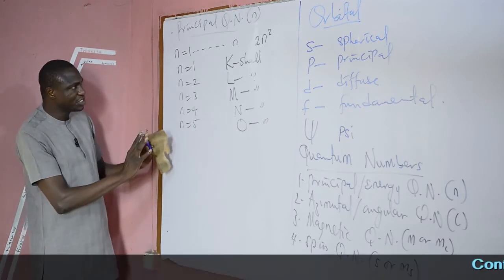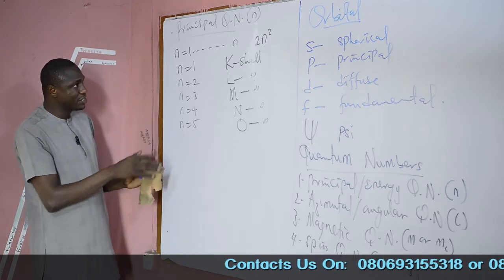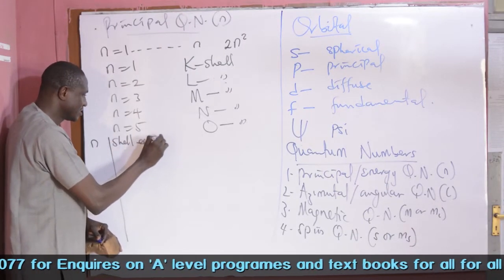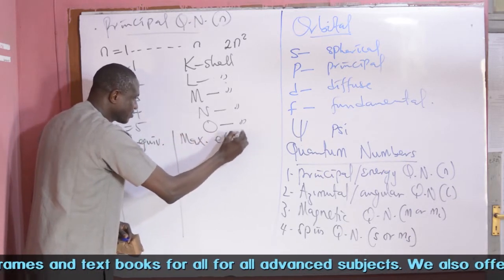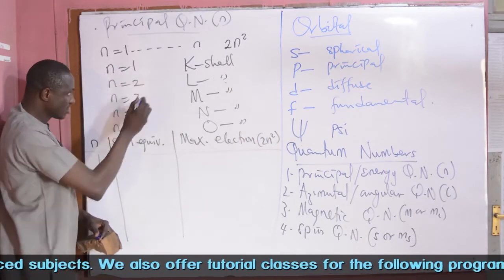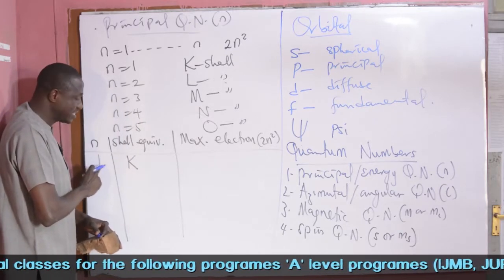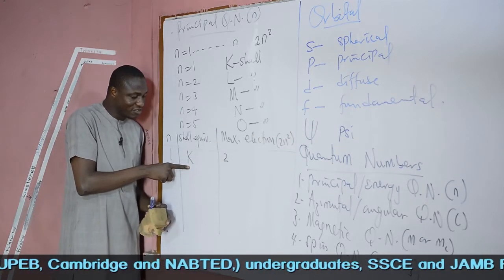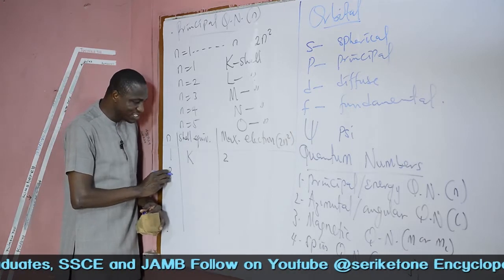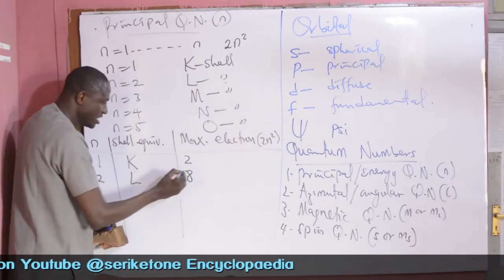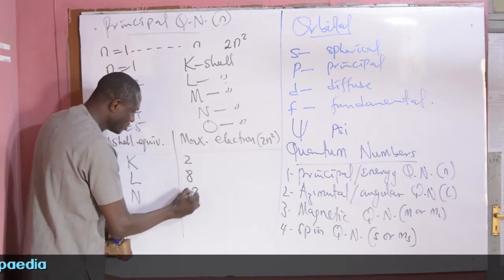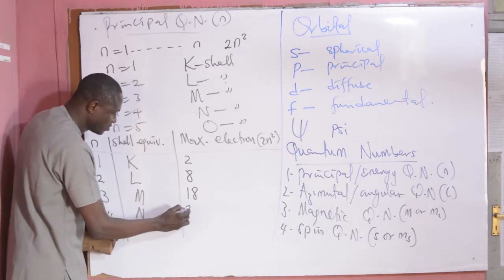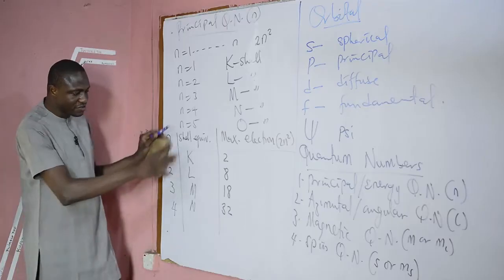Let us look at how electrons that occupy each shell are distributed in an atom. We have the value of N, the shell equivalent, and the maximum electron count which is 2N². When N=1, K shell, maximum 2 electrons (1²×2=2). When N=2, L shell, 2²×2=8. When N=3, M shell, 3²×2=18. When N=4, N shell, 4²×2=32. And when N=5, O shell gives a total of up to 50 electrons.